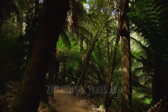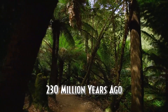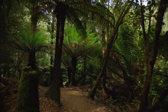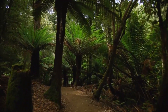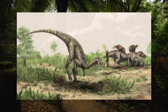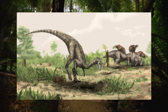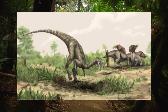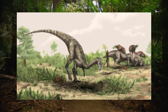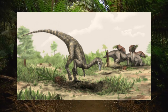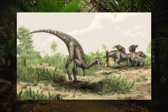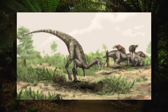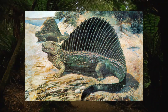Later in the Triassic, approximately 230 million years ago, during the Carnian stage of the late Triassic, a group of Archosaurs evolved into the first dinosaurs, taking the form of small bipedal omnivores. By the end of the Triassic, they had almost completely out-competed the previous ruling group of animals, the Synapsids.